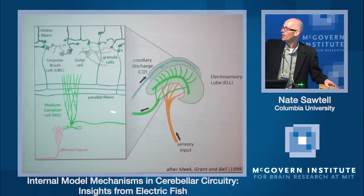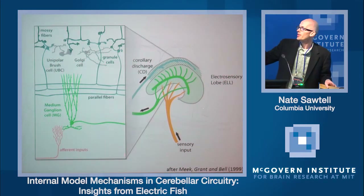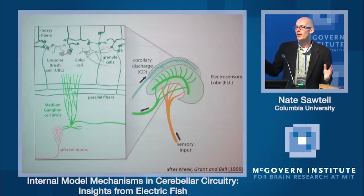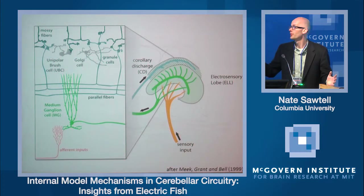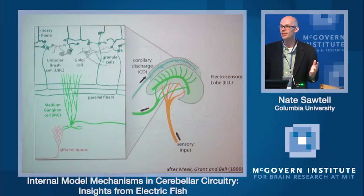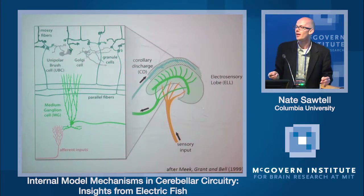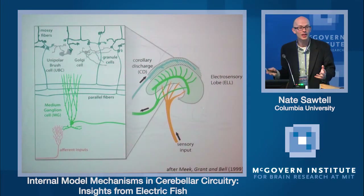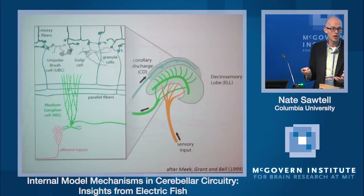These cells receive their corollary discharge input via a mossy fiber granule cell parallel fiber system that closely resembles the circuitry of the cerebellum. So we refer to ELL as a cerebellum-like sensory structure. Some of the insights from ELL may be relevant to understanding how internal models are formed in the cerebellum.